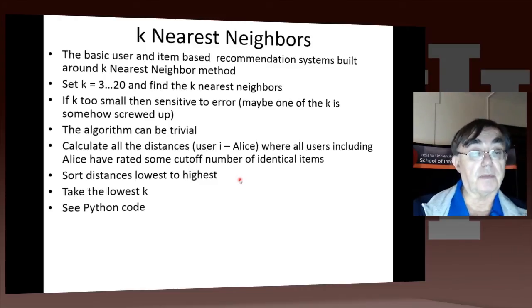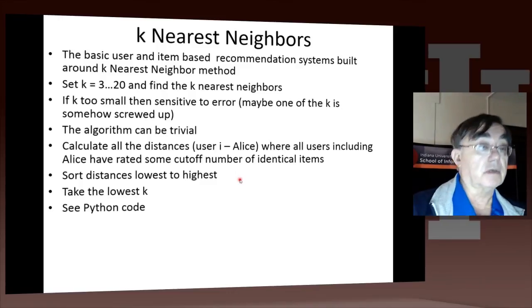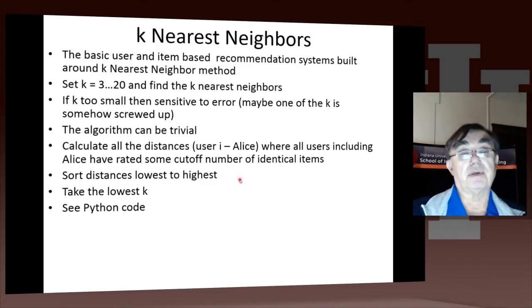Then you use some formula to take those three to twenty users, or it could be bigger, and use that to help Alice predict what she'd like. The algorithm is very simple: you calculate the distances, you sort the distances, and you take the k distances which are smallest. This is given in Python in the next lesson.